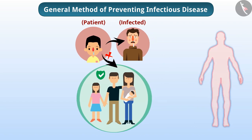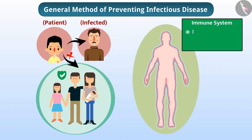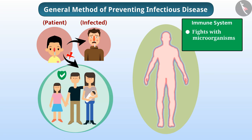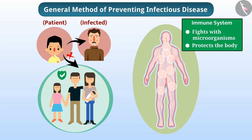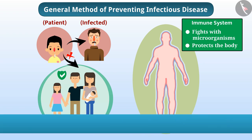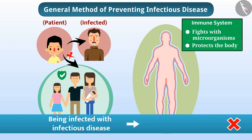Our body has an immune system which fights with microorganisms and protects the body. As soon as a microorganism enters our body, some cells become active. They kill the microorganisms so that we do not get a disease. Immune cells kill the disease-causing microorganism before the infection spreads. Therefore, being infected with an infectious disease does not necessarily mean that we have suffered from that particular disease.